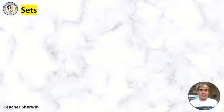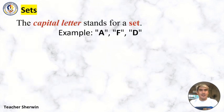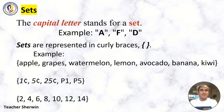How about sets? So as mentioned, small letter is for elements. If you're going to write it, capital letter stands for a set. For example: set A, it's written in capital letter, set F and set D. Sets are represented in curly braces. So this is the symbol for sets, curly braces. As you can see, we have curly braces.